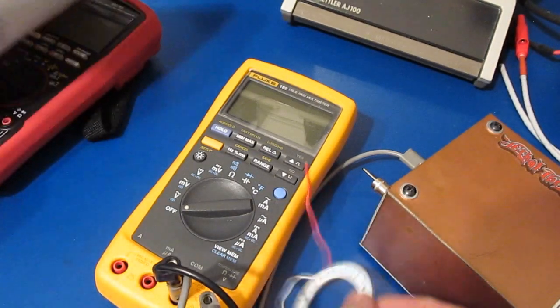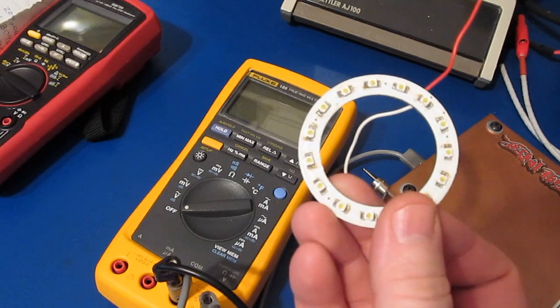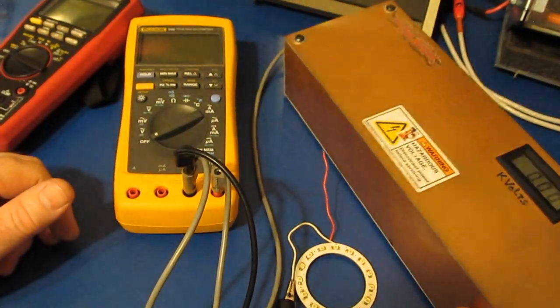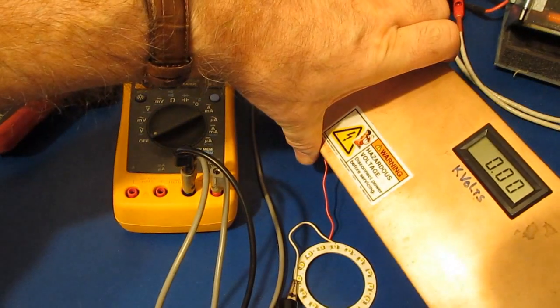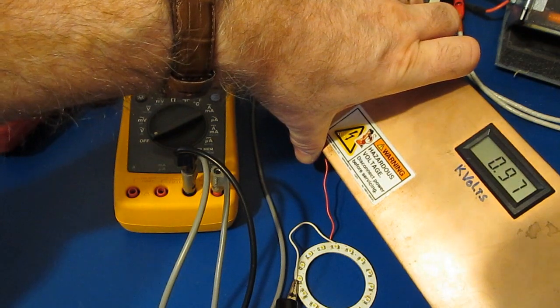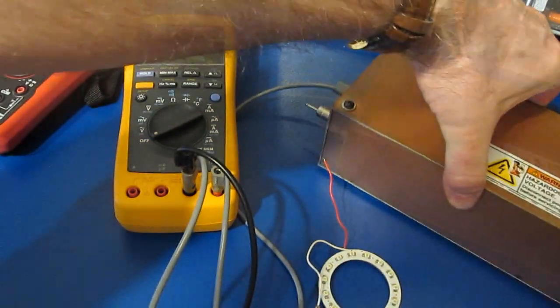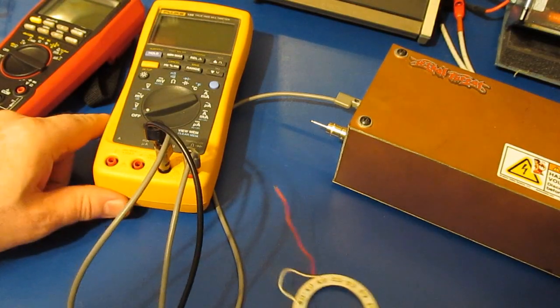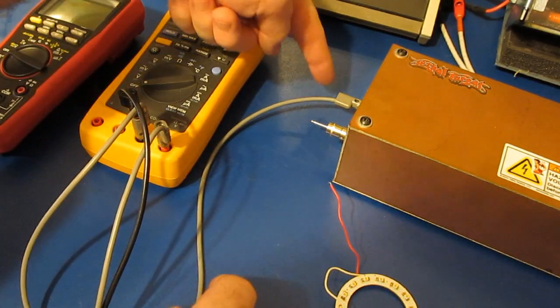So what I have here is just a string of LEDs. And over here we have our homemade ESD gun. What I'm going to do is turn this up to roughly 1000 volts. Close enough, so 960 volts.